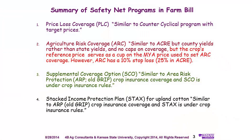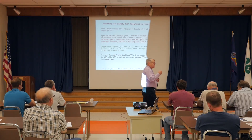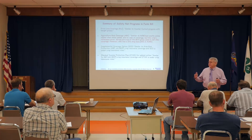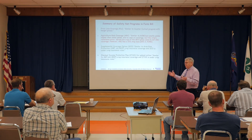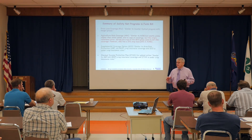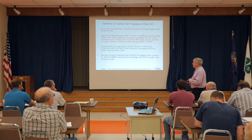The Supplemental Coverage Option is an insurance contract similar to area risk, or what used to be called GRIP. It's triggered off of the county, but what's different from GRIP is that once it triggers, it is tied back to your individual APH rather than just multiples of the county revenue. So it does come back to your APH, but it's triggered strictly from the county. If the county does not trigger, there is no payment. If the county does trigger, there is a payment, and it goes back to your APH to determine the size of the payment. Even if you don't have a loss on your farm, it doesn't matter — you still get paid.